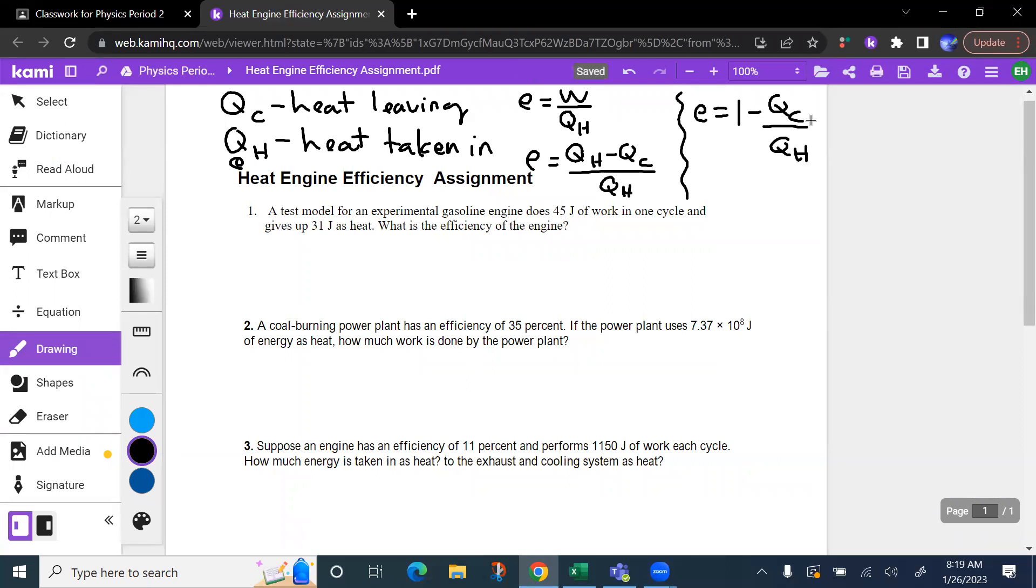Okay, let's begin. As always, make sure you read carefully. Make sure you annotate. And let's go ahead and do this. A test model for an experimental gasoline engine does 45 joules of work and gives up 31 joules as heat. So gives up, that would be Qc. We want to know the efficiency of the engine. We have Qc is 31 joules. We have the work, which is 45 joules.